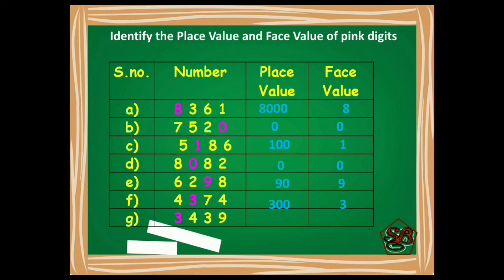Moving on to the next. 1's, 10's, 100's, and 1000's. Now this 3 is at 1000's place, so the place value will be 3000. Wonderful. And the face value will remain the same, the digit itself, that is 3.